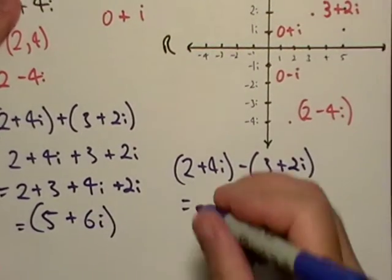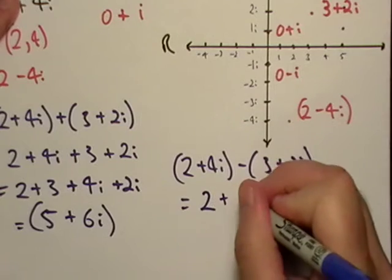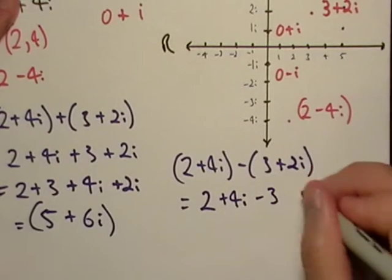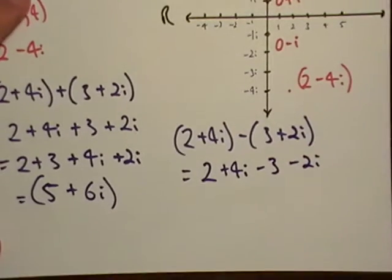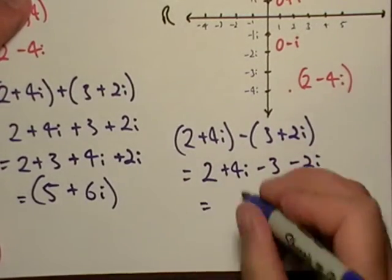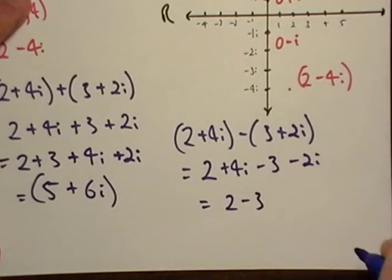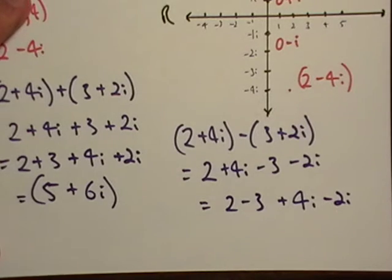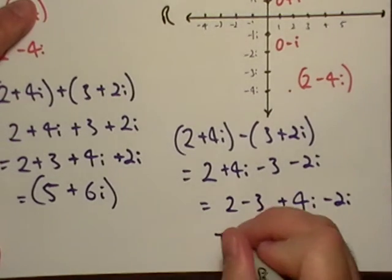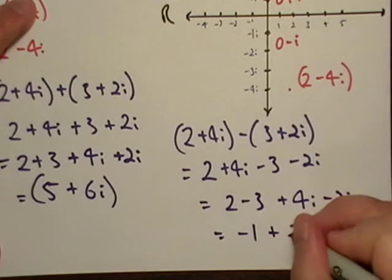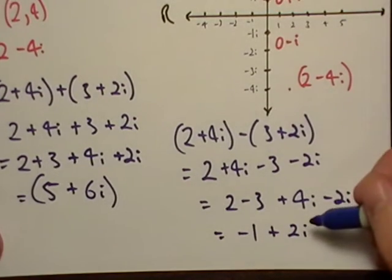Now remember, I like to just treat it like a variable. So I'm just going to go 2 plus 4i, but I'm going to distribute the negative sign. So I get 2 minus 3 plus 4i minus 2i. So that is equal to negative 1 plus 2i.